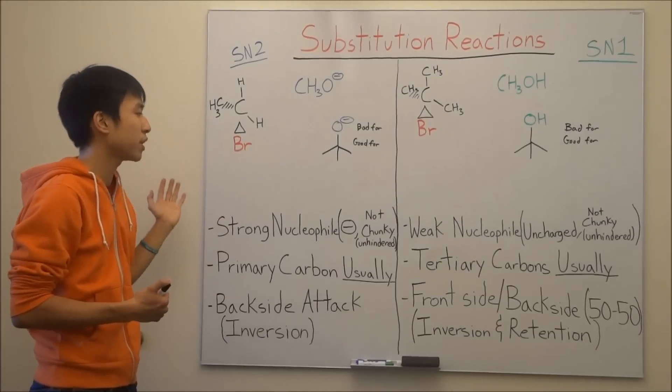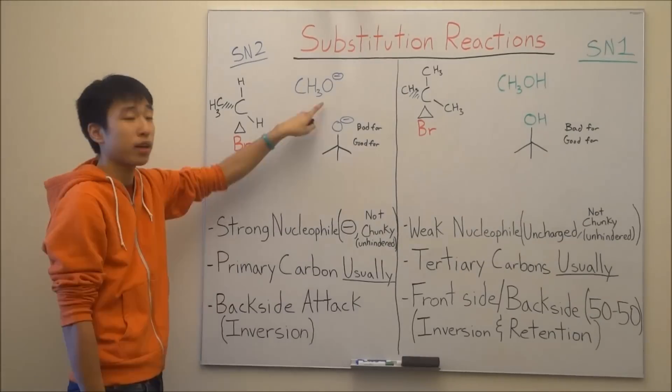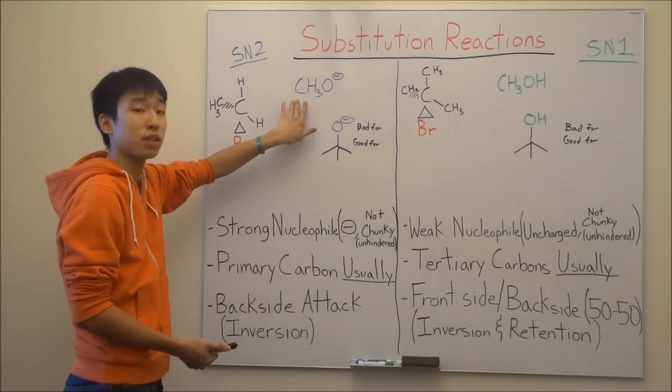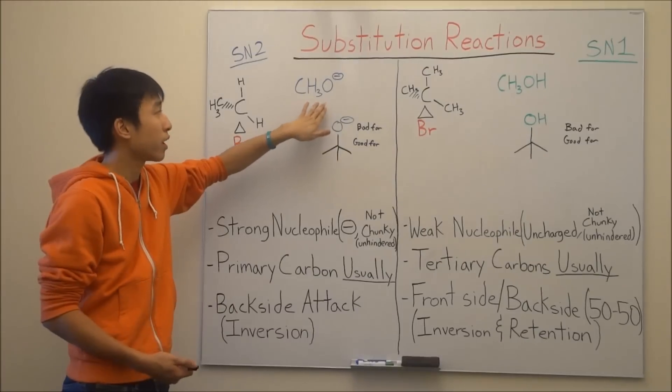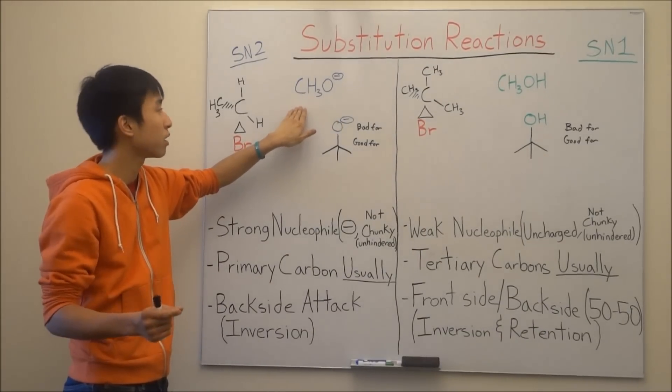Now, for SN2 reactions, you're going to be working with a strong nucleophile. In our case here, it's methoxide. It's called methoxide because of the CH3 here, which is a methyl group, and then the oxygen here, so oxide. So when you put it together, methoxide.